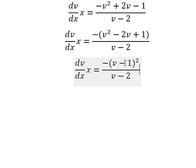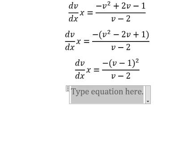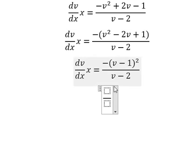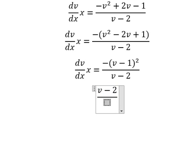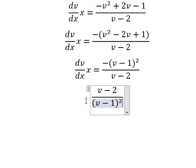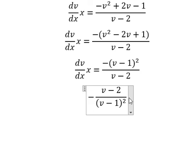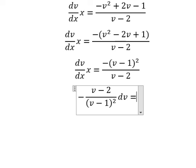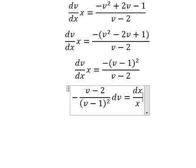Now this one, we go to the left. And x will go to the right. So we get v minus 2 over v minus 1 to the power of 2. And we have a negative sign here. And we get dv equals dx over x.